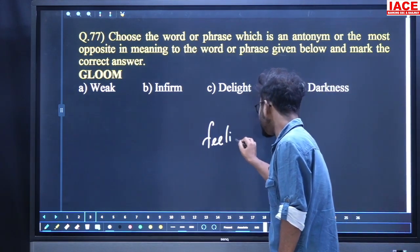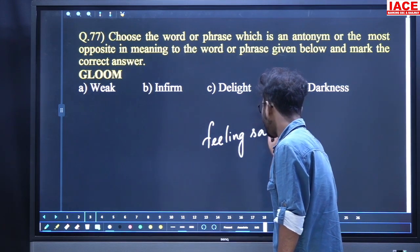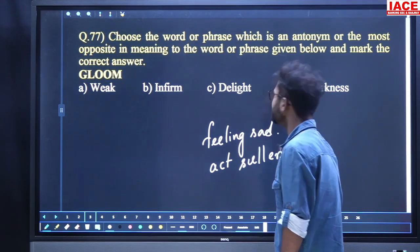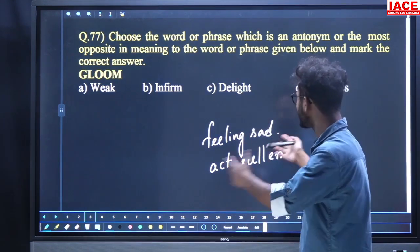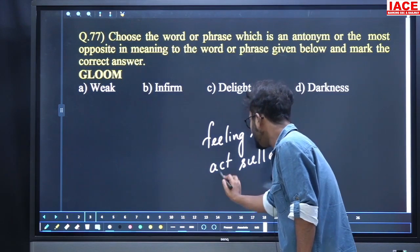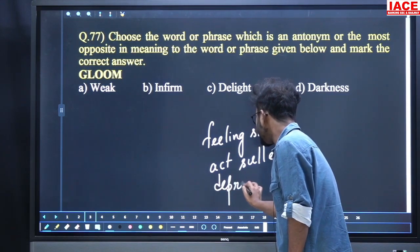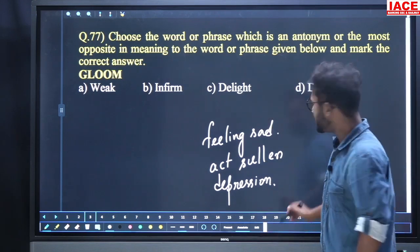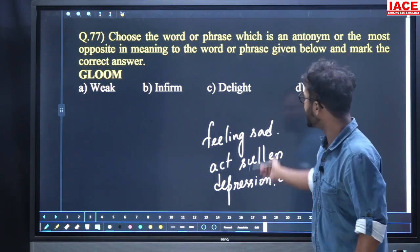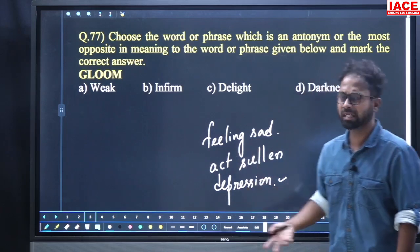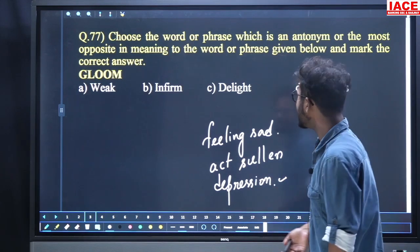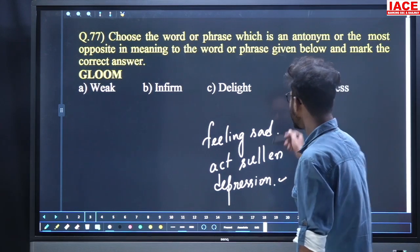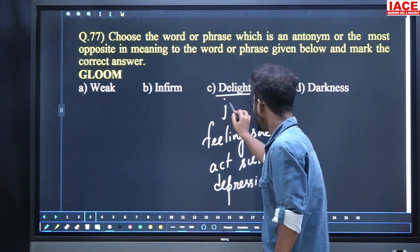There are many meanings for 'gloom'. One is feeling sad. Another is sullen — meaning very serious or sad, tragic. Another meaning is depression. Whenever depression happens, you feel sad. The options are: weak, inform, delight, and darkness. Delight means joy or pleasure.